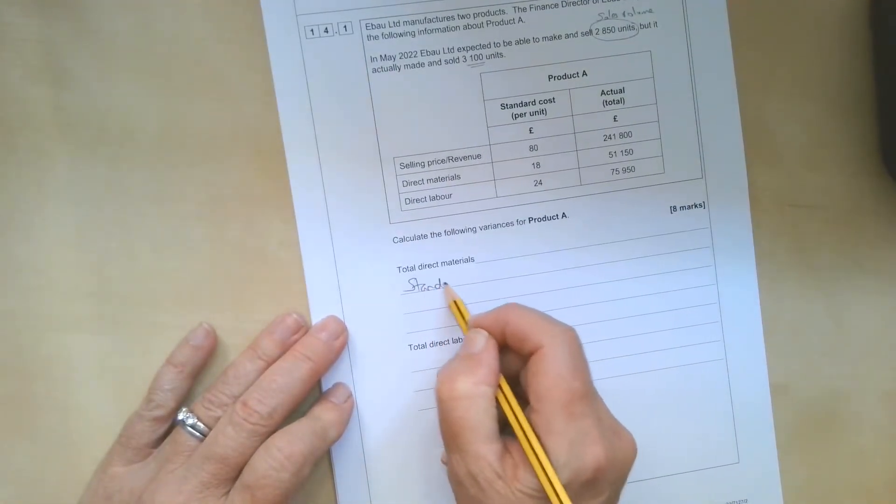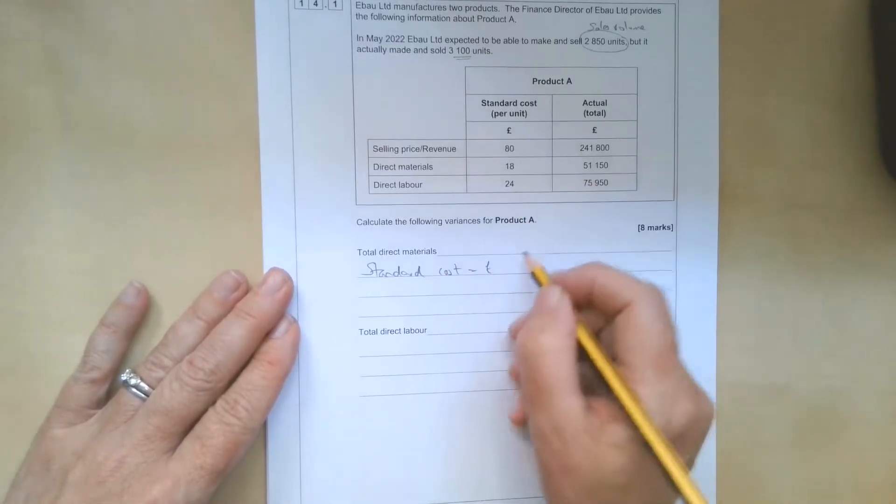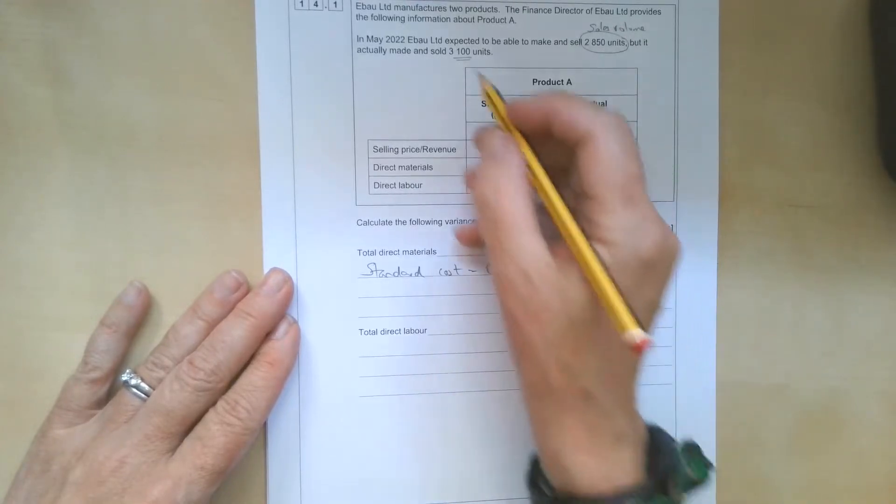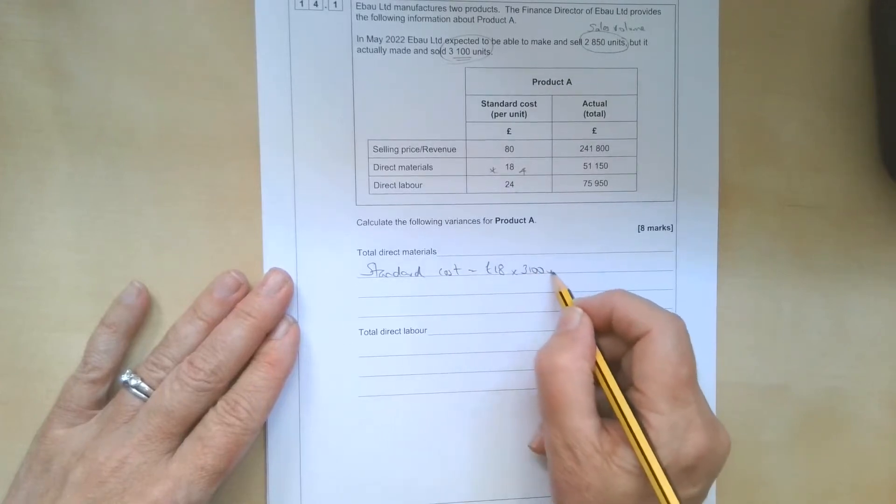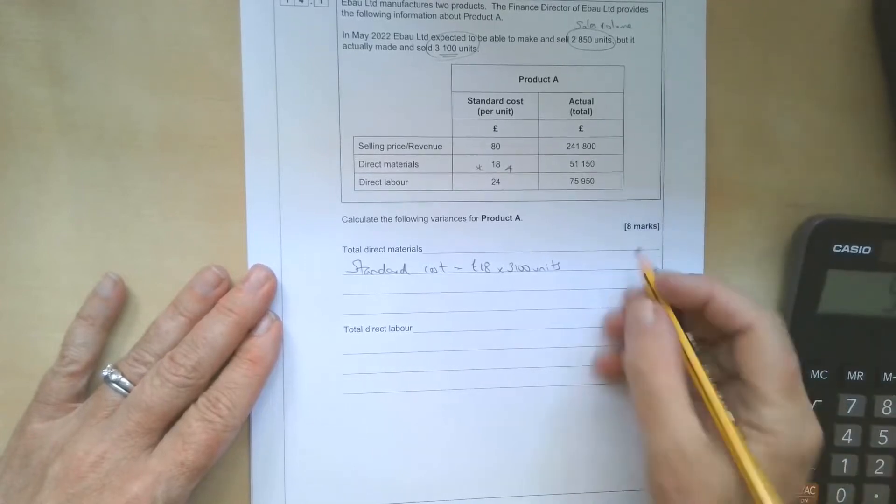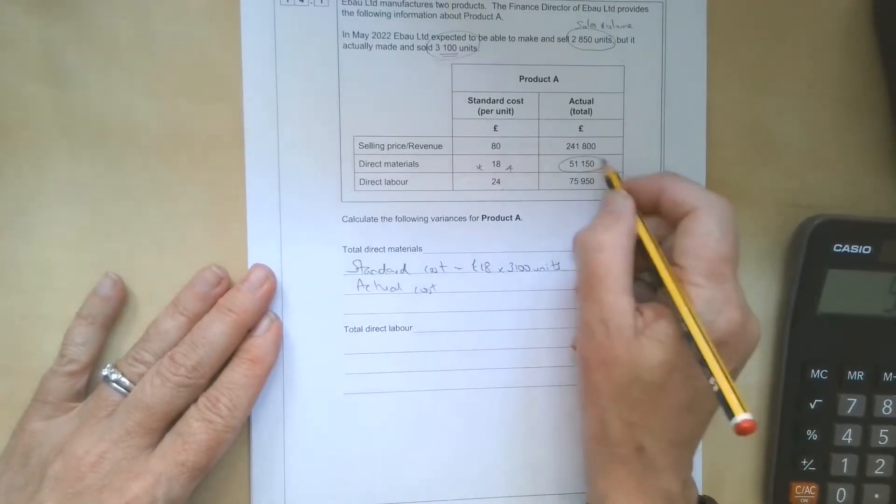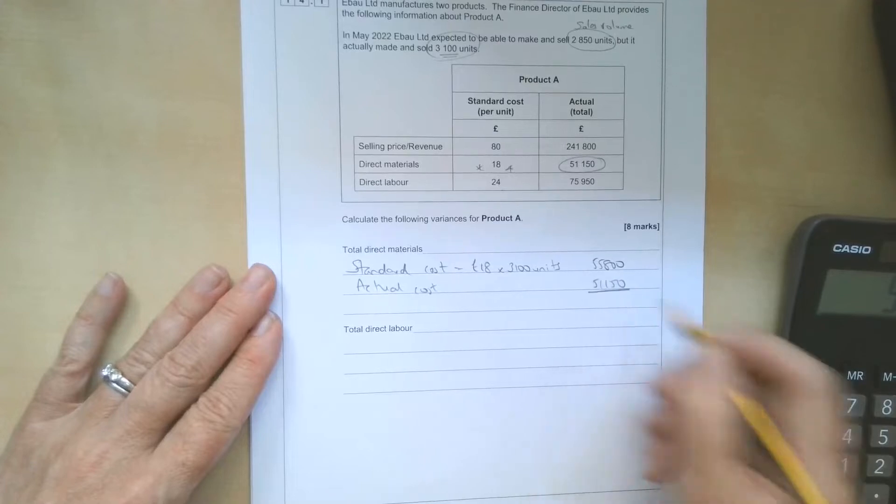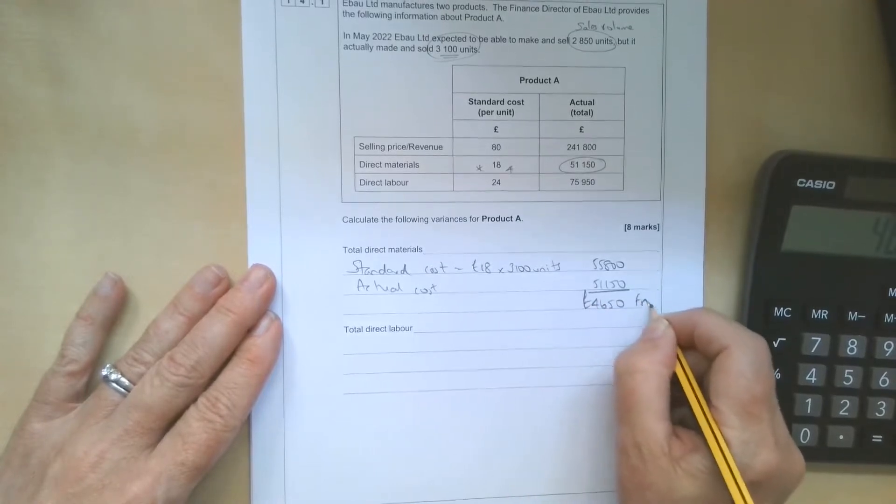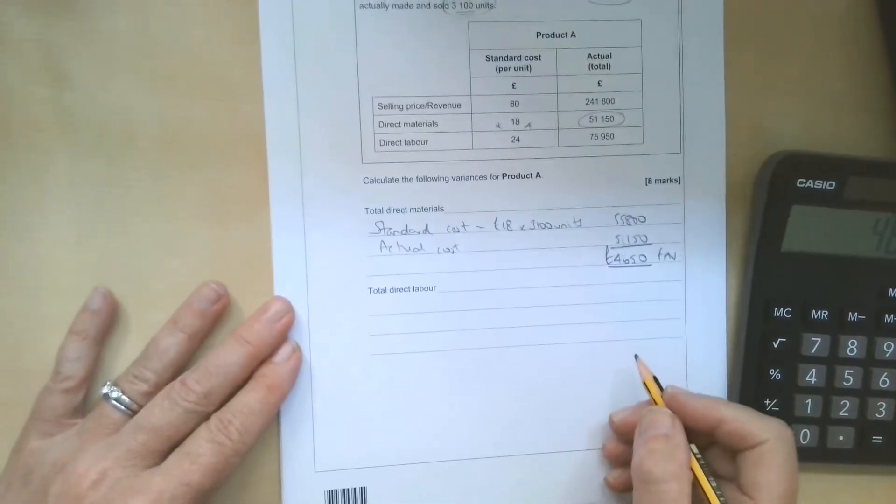So the standard cost for materials is £18 per unit. We're going to multiply that by the number of units we actually made and sold. So £18 times 3,100 units is £55,800. The actual cost though is given to us there, it's £51,150. Now, because the actual is lower, that's going to give us a favourable variance of £4,650. Please make sure you label your variances FAV for favourable, ADV for adverse or something similar. And make sure it's clear. Don't just put pluses and minuses.